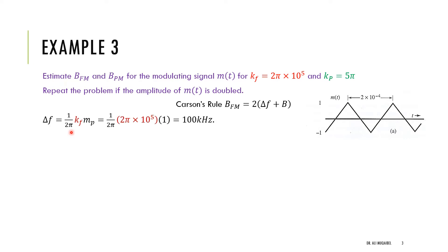For FM, delta_F in hertz equals K_f times M_p divided by 2π. The value of K_f is given, and the peak of the message M_p, which is symmetric and peaks at 1, is read from the diagram. Substituting gives a frequency deviation of 100 kHz.